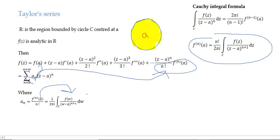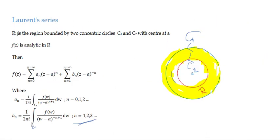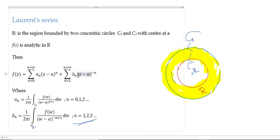Laurent series: Capital R is the region bounded by two concentric circles C1 and C2 — the region outside C2 and inside C1, called the annular region. If f(z) is analytic in this annular region, then f(z) equals the summation from n=0 to infinity of a_n(z−a)^n plus the summation from n=1 to infinity of b_n(z−a)^(−n). The second part is not analytic, since (z−a)^(−n) is not analytic at z = a.